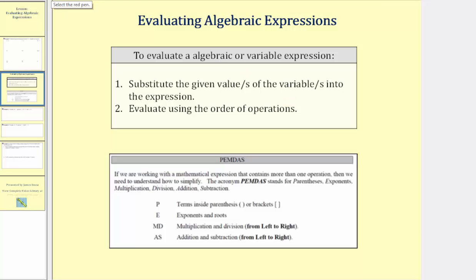For review, the order of operations are listed below. Step one, we simplify inside the parentheses or grouping symbols. Step two, we simplify the exponents and roots. Step three, we multiply and divide from left to right. And step four, we add and subtract from left to right.